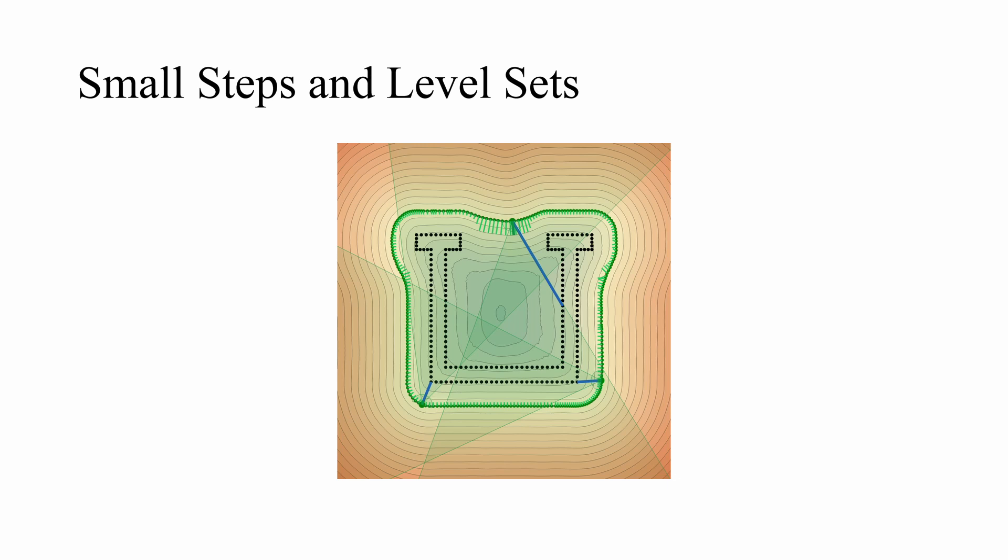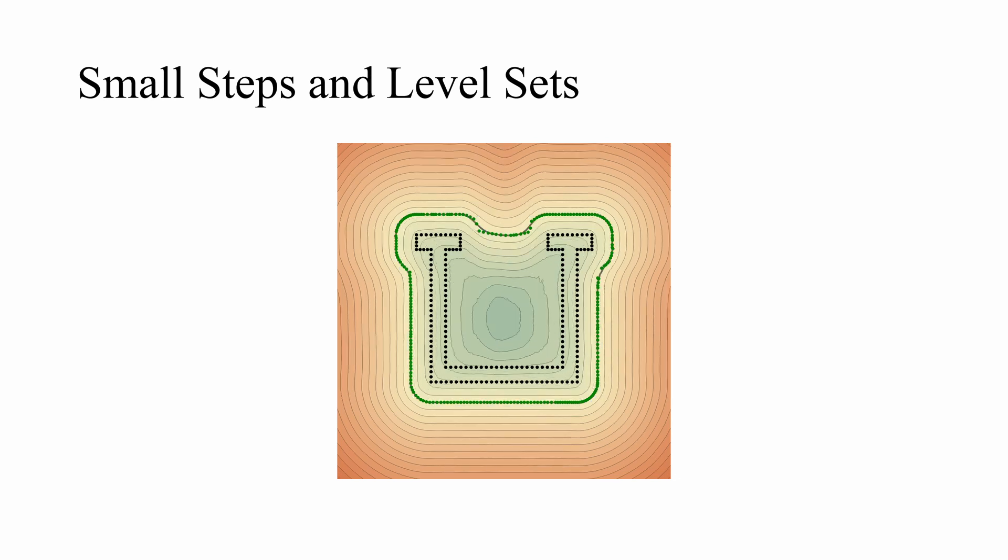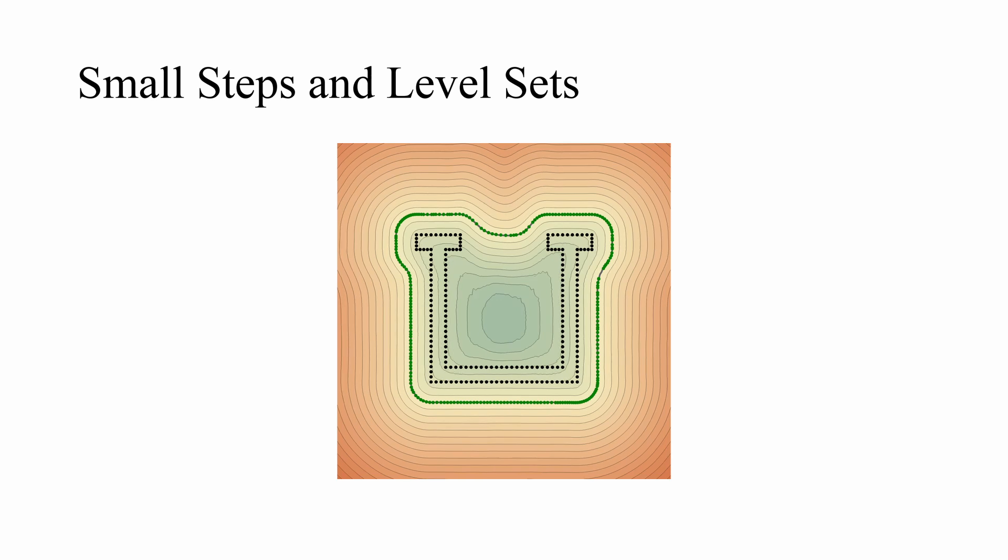In particular, we move each guiding point towards the closest input point in its inward normal direction, shown for three guiding points here. After the points have moved, we optimize for reconstruction and then adjust both the guiding points and the network to be consistent with each other.